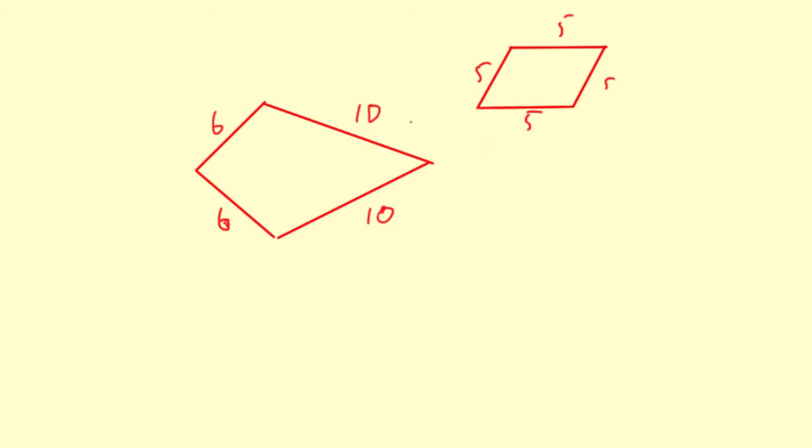What's a kite? Well, you have a four-sided shape with two pairs of sides the same length, and those sides are consecutive.